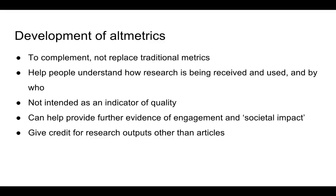The development of altmetrics: when it first appeared in 2010 after a hack day, there was a tweet by Jason Priam from Impact Story referring to the term altmetrics. Since then it's become a bit of a Chinese whispers — people have their own idea of what altmetrics are, in the same way they may have their own idea of what impact is and how that can be measured. For some people there was a threat that altmetrics would replace traditional metrics, but actually altmetrics are there to complement traditional metrics — to give an extra layer on top of what we already know, so it helps people understand how their research is being received and used by whom.